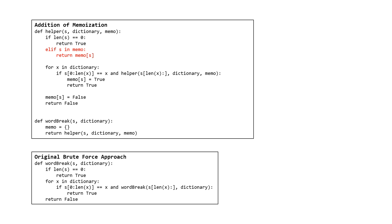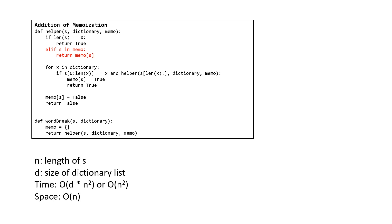The time complexity of this memoized algorithm is now polynomial: O(N² × S), or just O(N²) if you convert the dictionary to a set. The space is O(N) for recursive calls, and the memo will contain at most N elements as well. This is because worst case, we subtract off one letter at a time, storing substrings like BCD, CD, and D — so we store at most N elements.